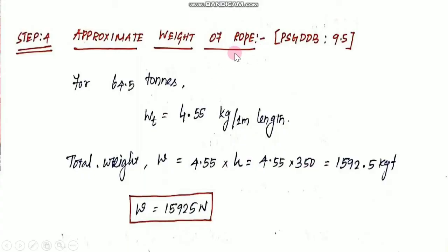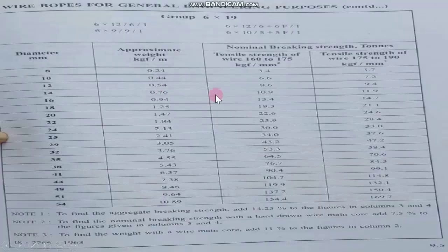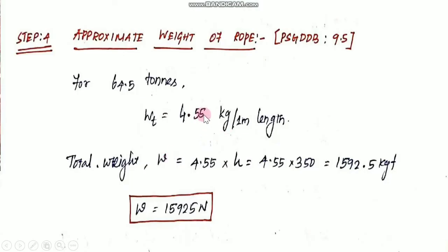Step 4: approximate weight of rope, from page 9.5. Rope diameter is 64 mm, giving approximately 4.55 kg per meter. The depth is 350 meters, so weight of rope = 4.55 × 350 × (convert to N in kgf) = 15,925 N. This completes step 4.